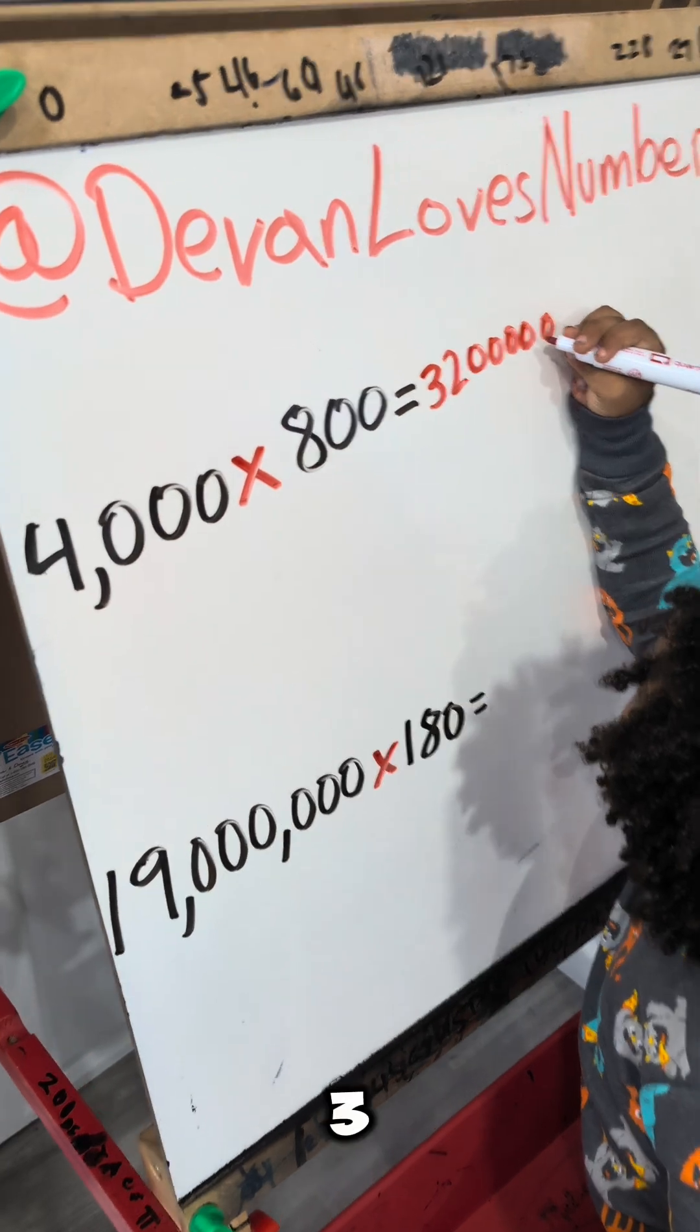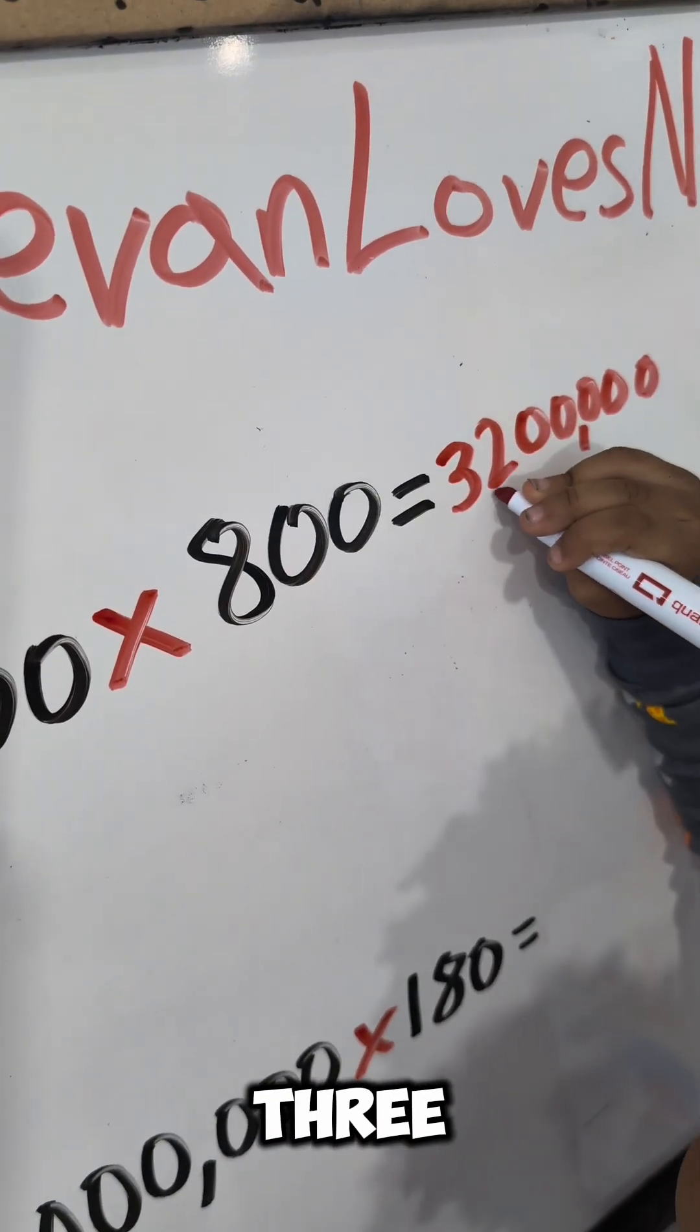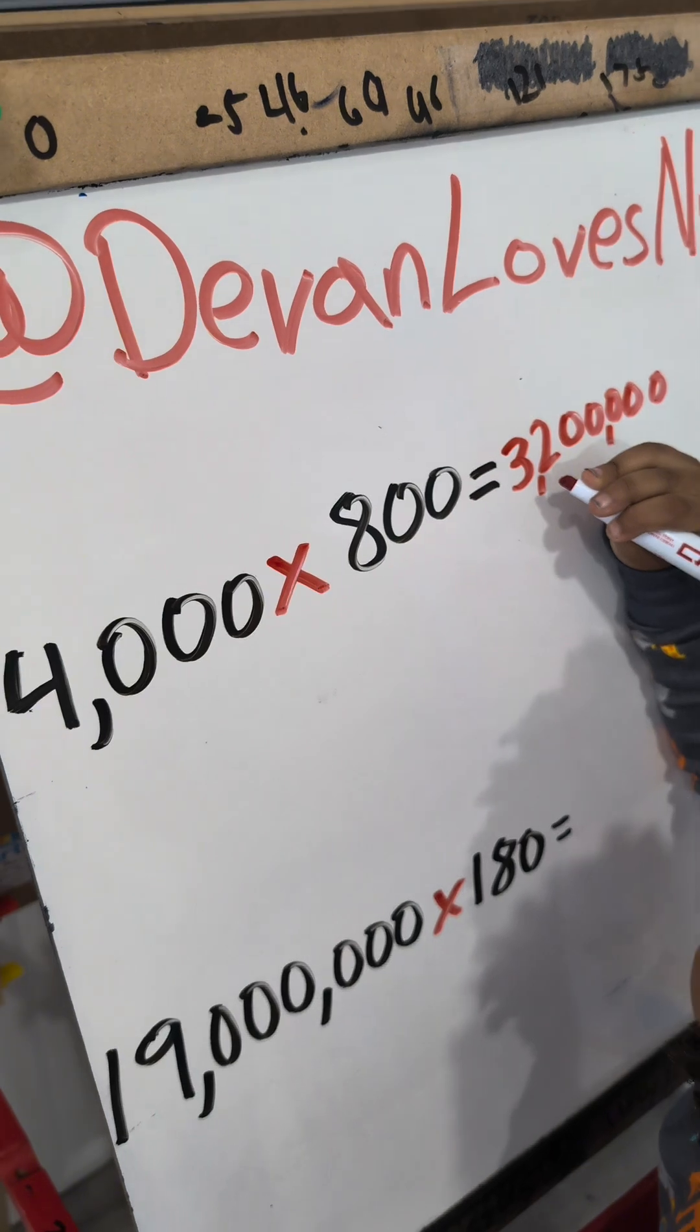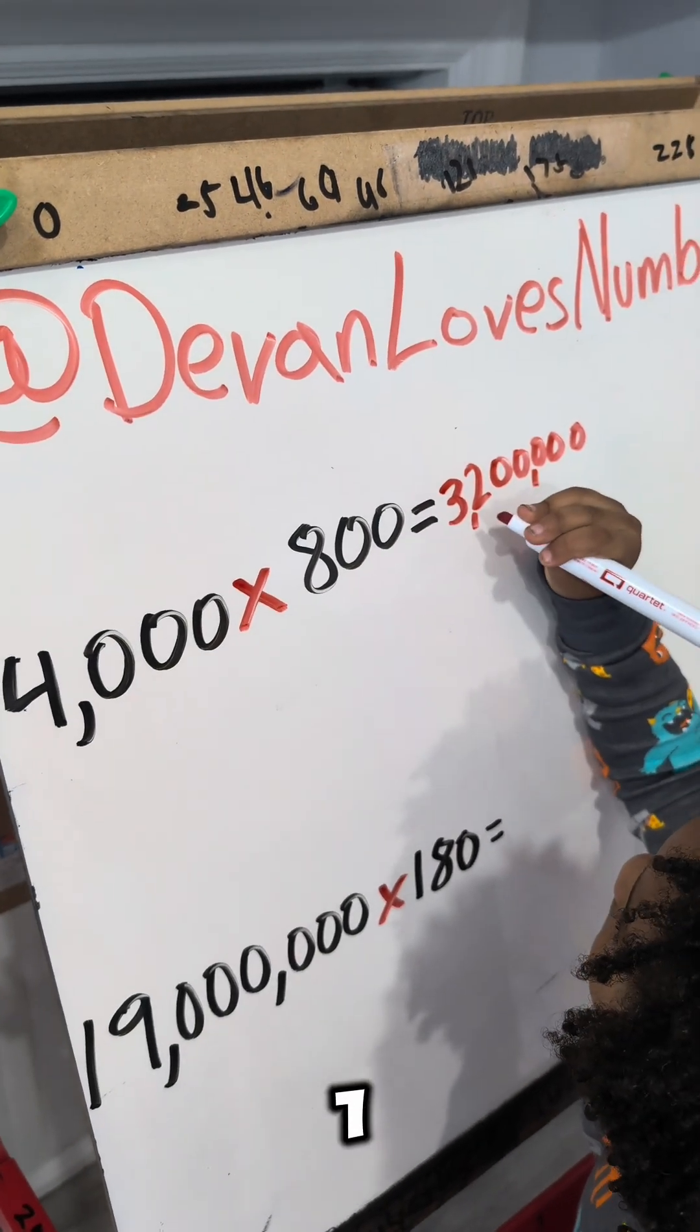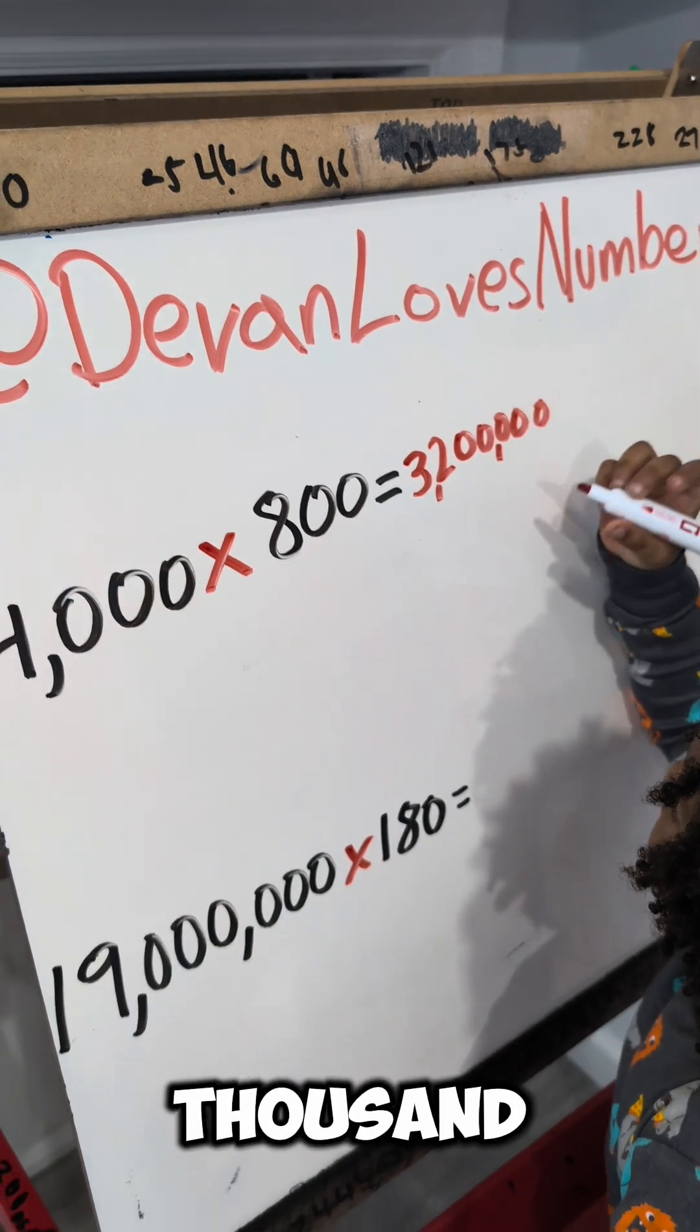One, two, three, comma, one, two, three, comma. One, three, million, two, hundred, thousand.